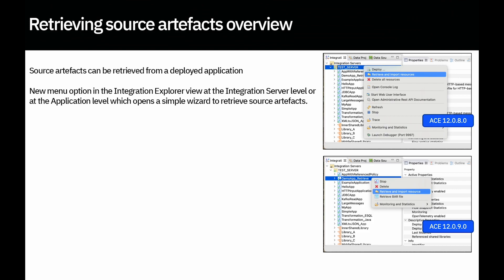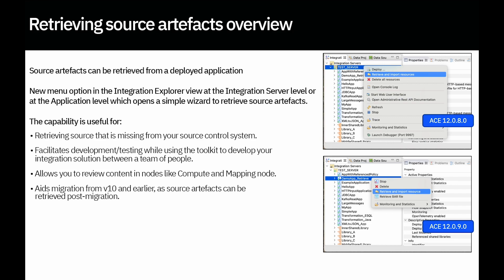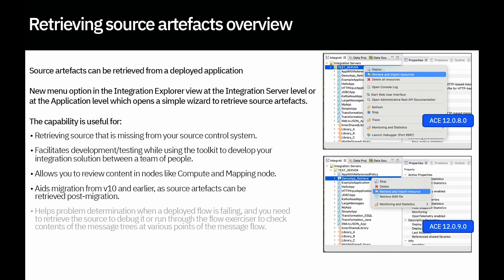The other piece of capability that we have enhanced is being able to retrieve source artifacts. We allowed you to retrieve source artifacts in 12.0.8, which was useful if the original source is missing from your source control system, or to allow team members to collaborate and debug flows. You're able to view the content in nodes like compute nodes and mapping nodes by retrieving the flow. New in 12.0.9, you can now retrieve artifacts which were migrated from version 10 and earlier, and retrieve message flows that were deployed as CMF — converting them to a message flow on retrieval.